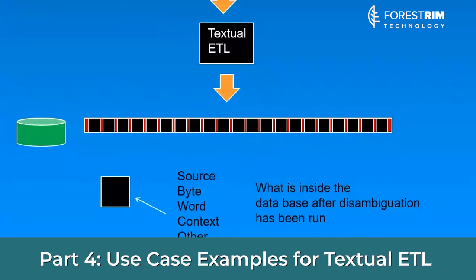What does your database structure look like when you put your text into the form of a database? You can have a lot of things, but the necessary minimum data that you have to have in the database is: identification of the source — where did the word you're looking at come from; the byte address — where was the word in the document itself; then the word that you're looking at; and then the context. The bare minimum in your database record is source, byte, word, and context.